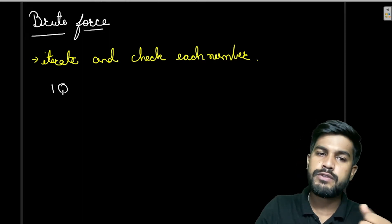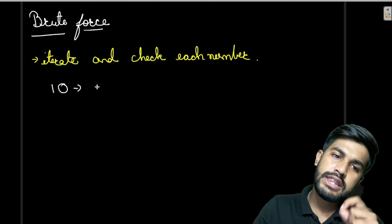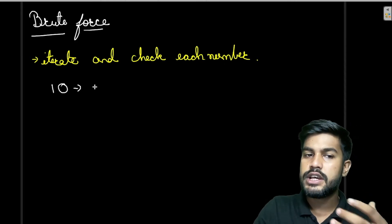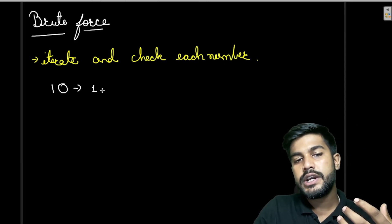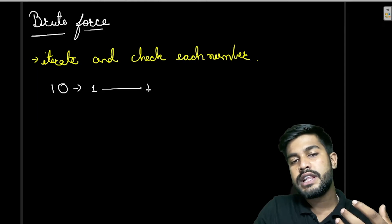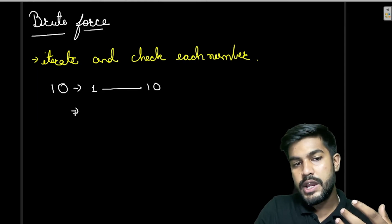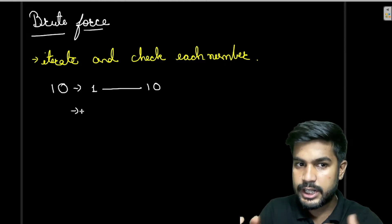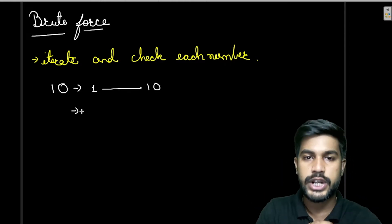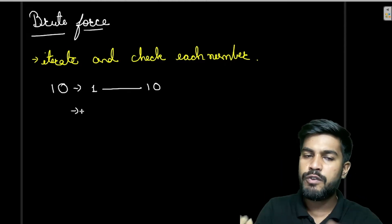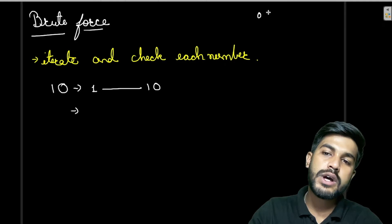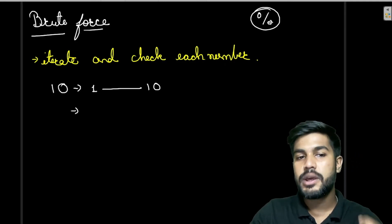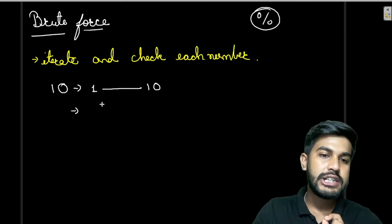Checking each number is very simple. Let's take the example of 10. What we would do is iterate from 1 till the value of 10, and then check if each value we are iterating completely divides 10. We would use the modulo operator, which returns the remainder.